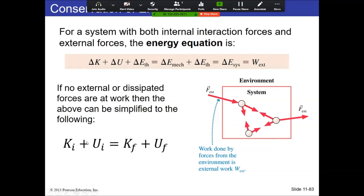Just to be clear on this equation — K initial and U initial refer to all of the objects in the system. In the picture over here, we have three objects in our system, so we might have three kinetic energy terms and three potential energy terms. It just depends on how many things we're talking about.